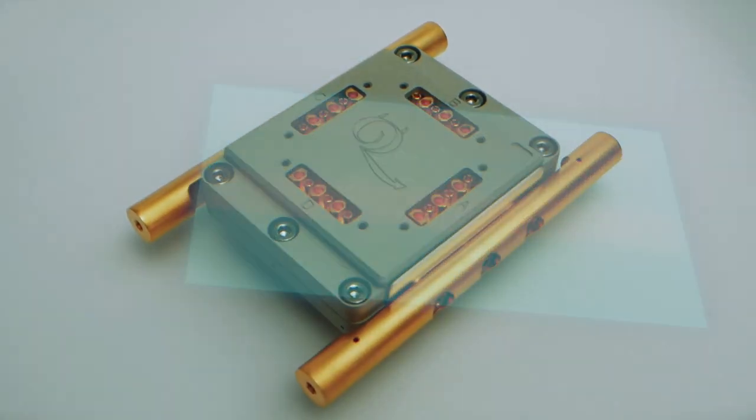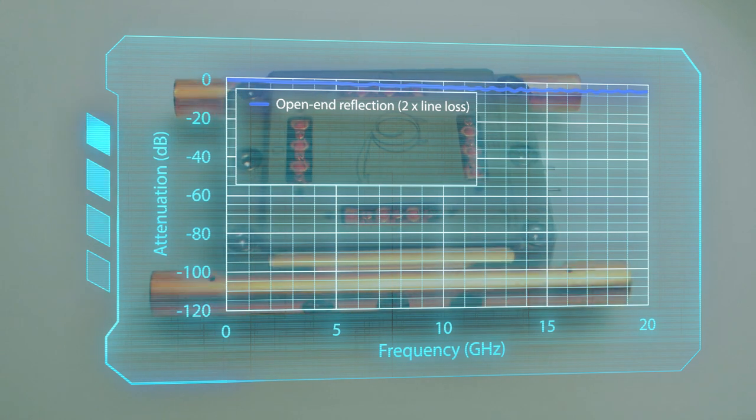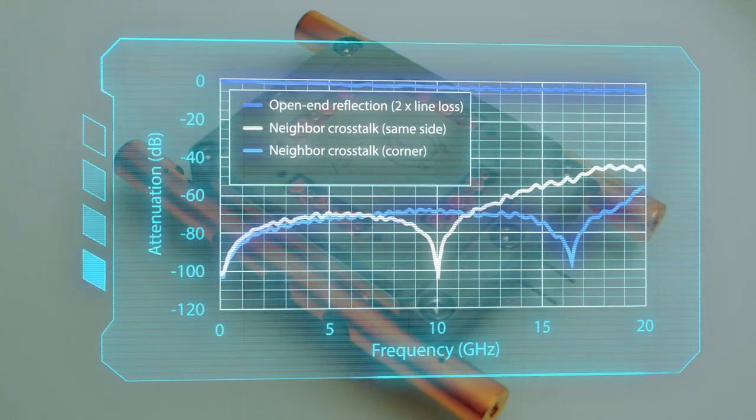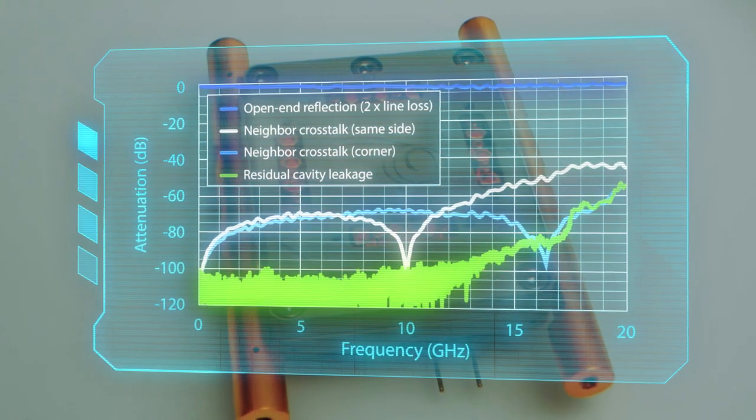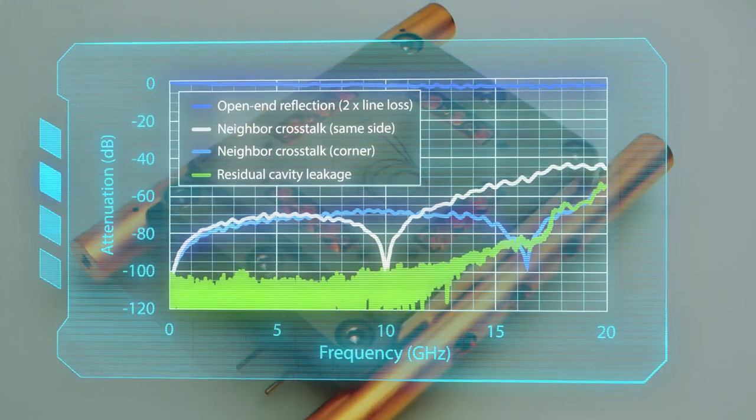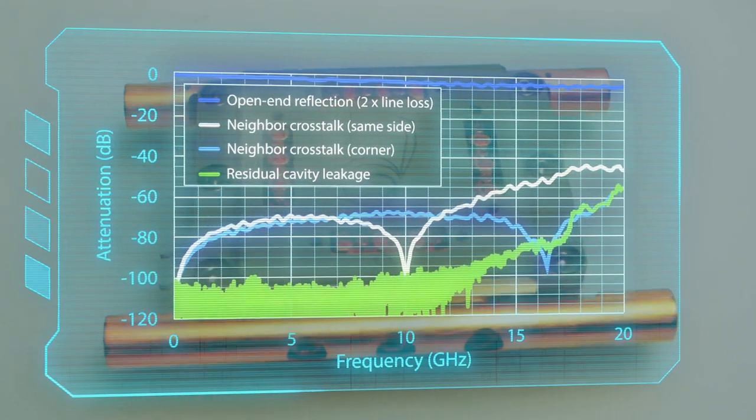S-parameter characterization has confirmed the low losses, less than 3 dB, and extremely low crosstalks between channels. Less than minus 90 dB is transmitted across the cavity up to 12 GHz. And the cavity transmission only creeps over minus 60 dB for frequencies above 18 GHz, where resonances start to occur.